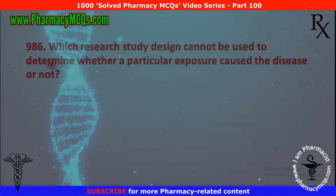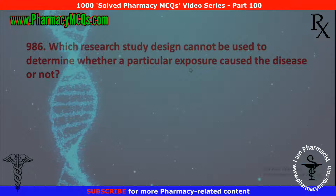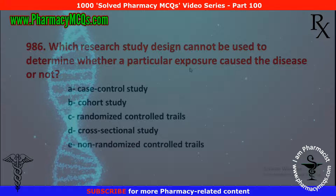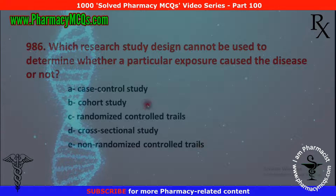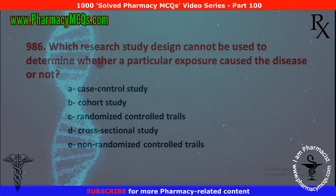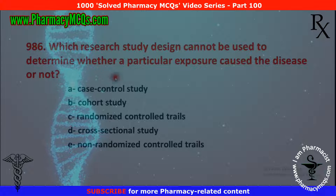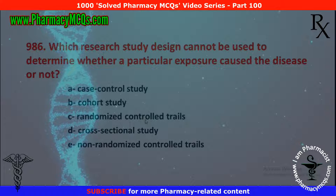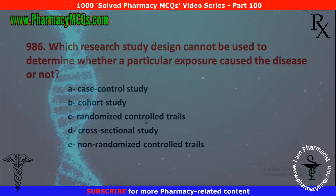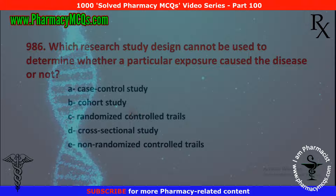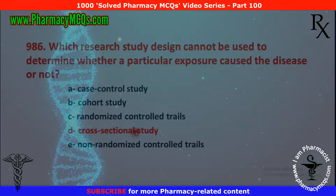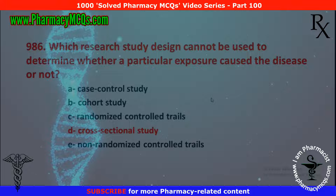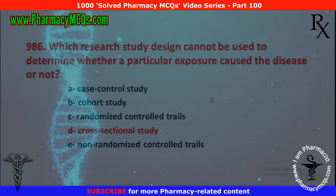Next MCQ: which research study design cannot be used to determine whether a particular exposure caused the disease or not? Options are: case control study, cohort study, randomized controlled trials, cross-sectional study, or non-randomized controlled trials. One of these study designs cannot be used to determine causation, and that is the cross-sectional study. In this study, the exposure and the outcome are studied at the same time, so it cannot be used to determine causation of a disease.